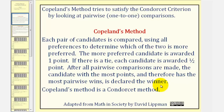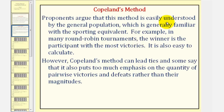Copeland's Method is a Condorcet Method. Proponents argue that this method is easily understood by the general population, which is generally familiar with the sporting equivalent. For example, in many round-robin tournaments, the winner is the participant with the most victories. It is also easy to calculate. However, Copeland's Method can lead to ties, and some say that it puts too much emphasis on the quantity of pairwise victories and defeats rather than their magnitudes.